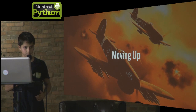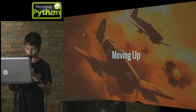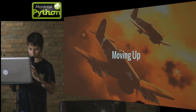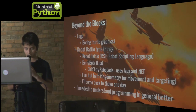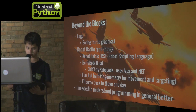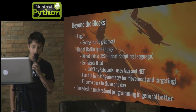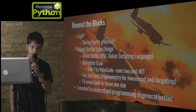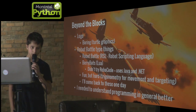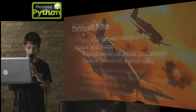Next I'll talk briefly about the things I used in between the blocks languages and Python, and then in more depth about how I learned to program in Python. In between, I used several things. I used Logo but it was a bit boring because it only had turtle graphics. I used some robot battle type things but they required trigonometry for basic functions such as movement and targeting, so as a seven-year-old I couldn't really get very far with them. And I generally needed to understand programming better.